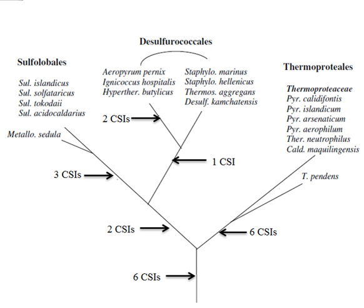Main-line CSIs are those in which a conserved insert or deletion is shared by several major phyla, but absent from other phyla. Figure 2 shows an example of a 5-aa CSI found in a conserved region that is commonly present in the species belonging to phyla X, Y and Z, but it is absent in other phyla A, B and C. This signature indicates a specific relationship of taxa X, Y and Z and also A, B and C based upon the presence or absence of such an indel.